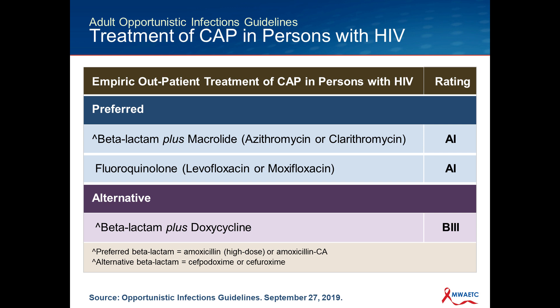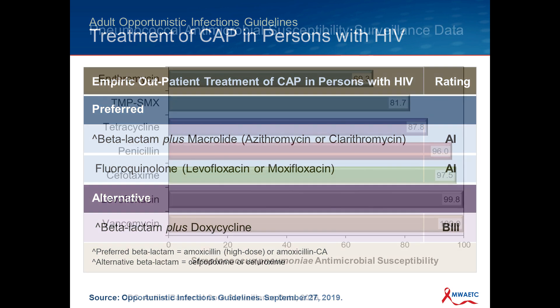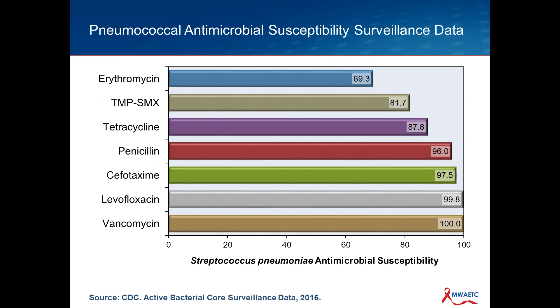An alternative could be a beta-lactam plus doxycycline, for example if somebody was intolerant to azithromycin. The reason macrolides have moved to a more cautious role where they're not used alone is based on data from 2016 from the Active Bacterial Core Surveillance. The susceptibility of antibiotics to pneumococcus has changed over time — with erythromycin as a surrogate for azithromycin and clarithromycin susceptibility, only approximately 70 percent of pneumococcal isolates are now susceptible. This is a community-wide change reflected in the updated ATS-IDSA guidelines.